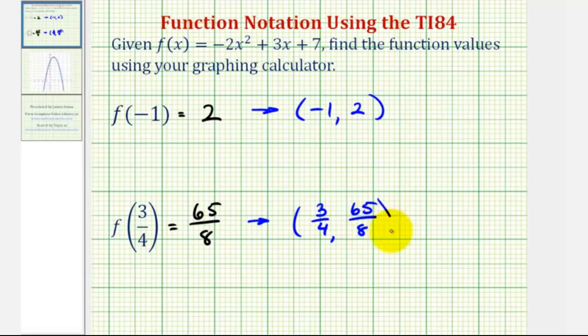But to verify this graphically, it's probably going to be more helpful to have our coordinates as decimals. So 3/4 as a decimal would be 0.75. And as we saw in the calculator, 65/8 is equal to 8.125.